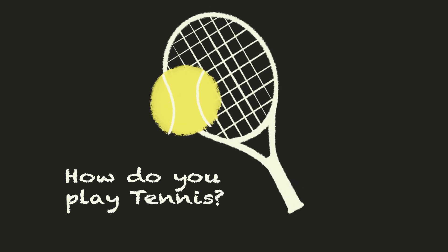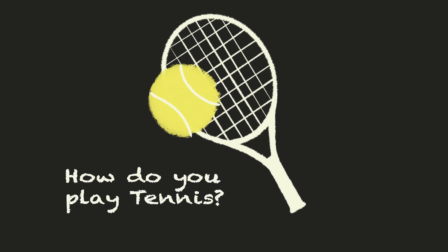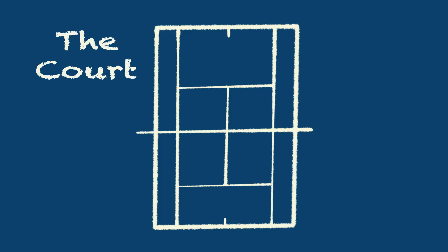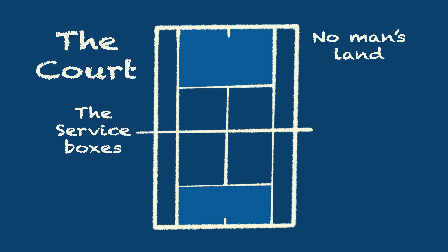Tennis scoring can be confusing for new players, so here's my crash course. First, let's talk about the court. Tennis courts consist of three main sections: the service boxes, no man's land, and the doubles alley.